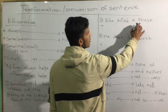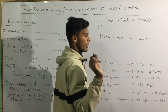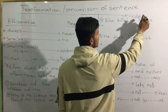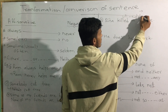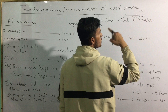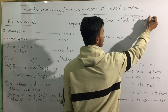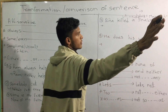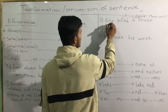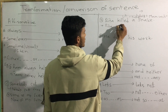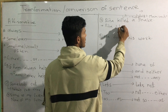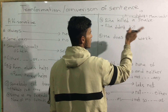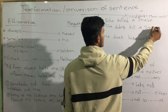Risa killed a snake. This is what we call the B2 form. For the negative: didn't plus the main verb in B1 form. Risa didn't kill a snake.